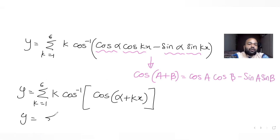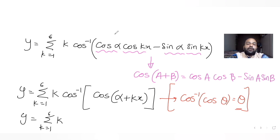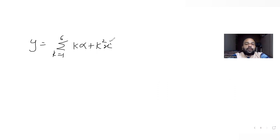Writing further, y equals summation of k equal to 1 to 6, k cos inverse of cos(α plus kx). Since cos inverse of cos θ equals θ, this simplifies to summation of k equal to 1 to 6, k times (α plus kx).